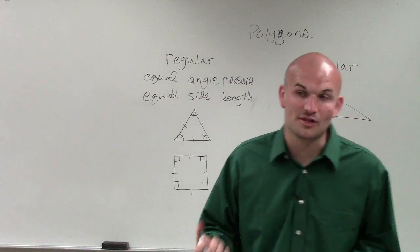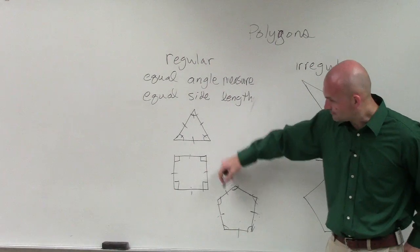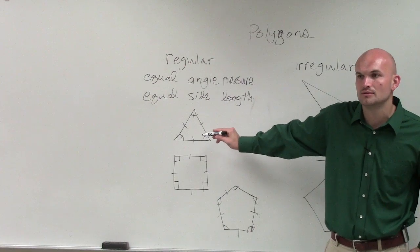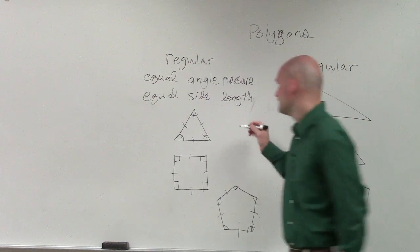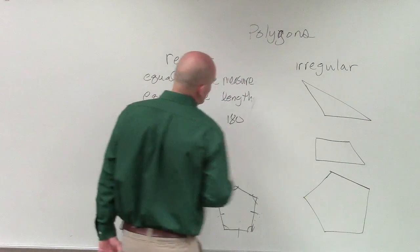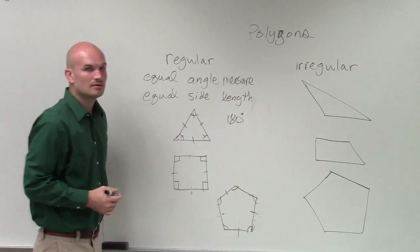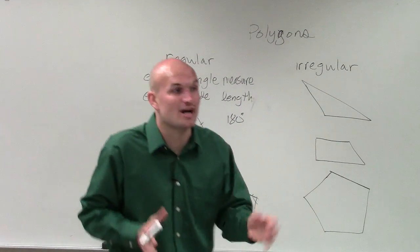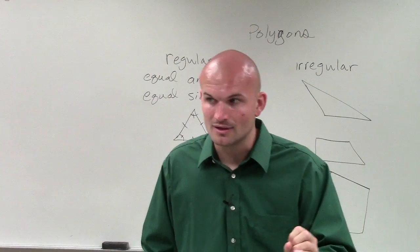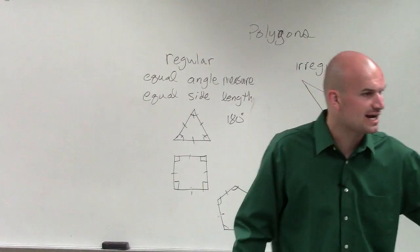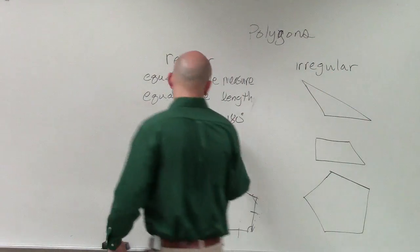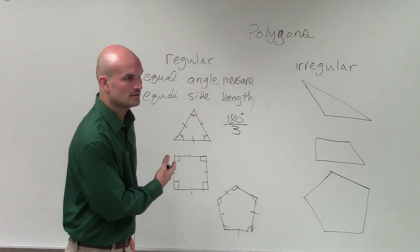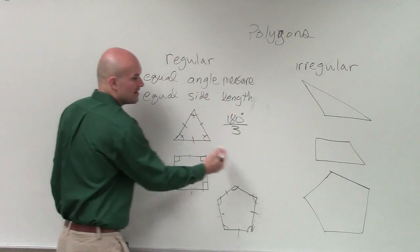Now, what is the sum of a triangle, sum of all the interior angles in a triangle? 180. How many angles, though, do we have? Three. So if I want to say, what is the measurement of each individual angle, I would take 180 and divide it by three. Does that make sense? So you divide it by three.